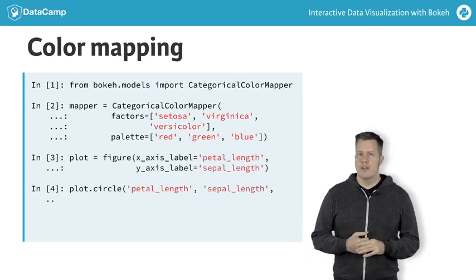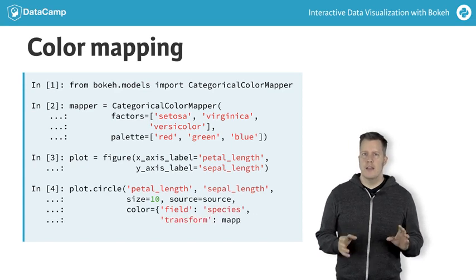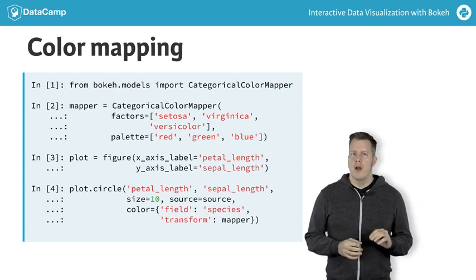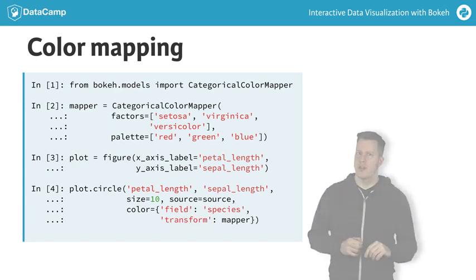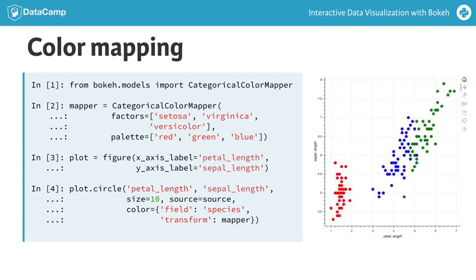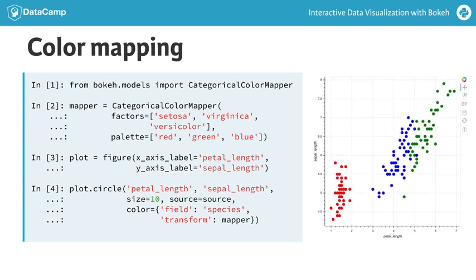Finally, we configure the glyph to use this mapper. For the color argument, we pass a dictionary. This dictionary has a key for field, with the value being the name of the column to map — in this case, the column name species. It also has a key for transform, which is the color mapper as the associated value. By passing this special dictionary, the color mapping now happens in the browser automatically. Looking at the plot, we can see that the points are shaded according to their species value and the color map we provided.